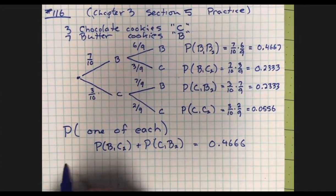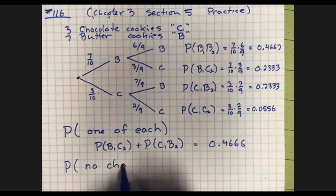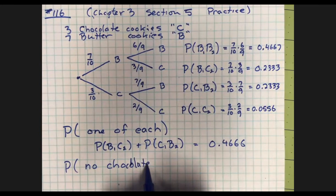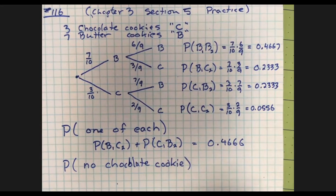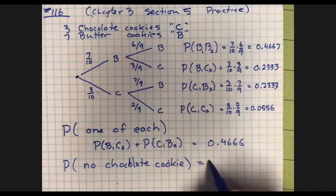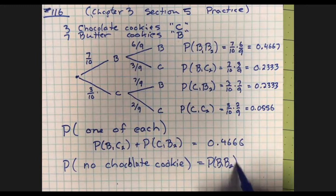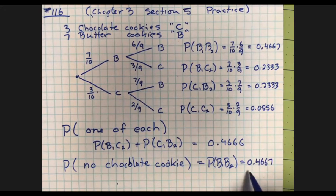The probability of getting one of each is: probability of butter then chocolate plus probability of chocolate then butter — that's the only way. Adding those together gives 0.4667. Note that equals the probability of getting two butter cookies. Also, 'no chocolate cookie' means two butter cookies — be flexible with how questions are phrased.